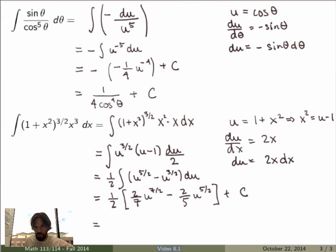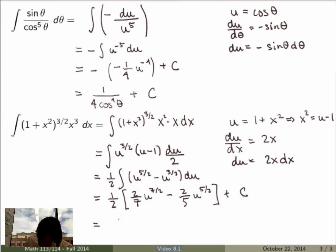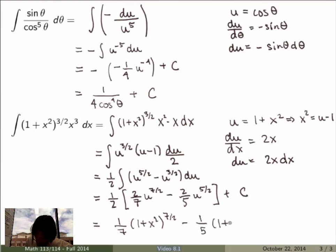Multiplying the one-half inside to cancel the twos and replacing u by one plus x squared gives the final answer: one-seventh times (one plus x squared) to the seven-halves, minus one-fifth times (one plus x squared) to the five-halves, plus C.